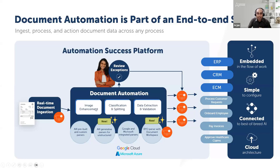Document automation consists of image enhancement, classification and splitting, data extraction, and validation. You don't have to look at any separate OCRs — it gives you options on what different OCRs are available and what extraction signals are available for you.